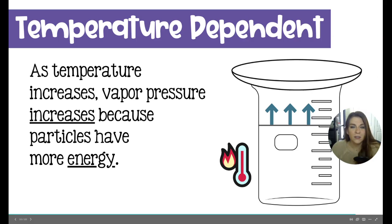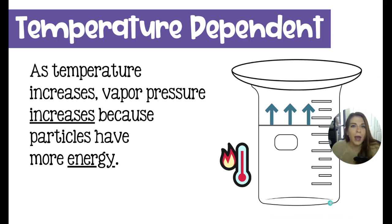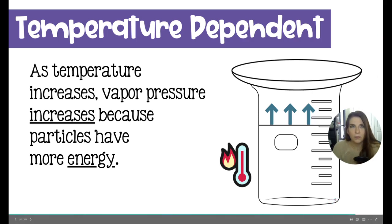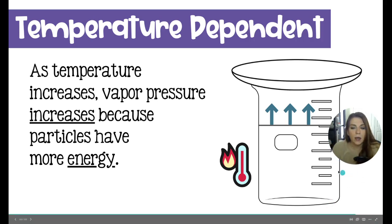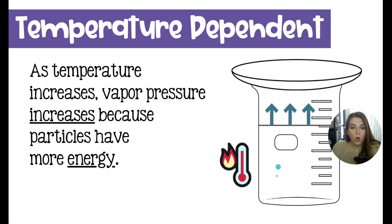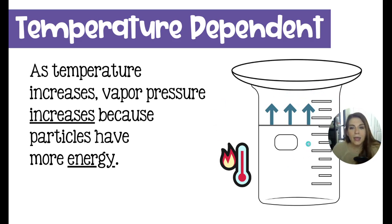You can also see vapor pressure in action if you have a plastic or glass water bottle that you can see through and you allow it to sit out. That water will slowly evaporate and there will be water vapor in the empty pocket at the top of the bottle. That water vapor can also hit the walls of the container and condense — that's how you get little water droplets inside your water bottle.